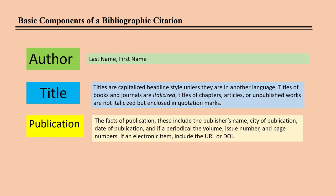The basic components of a bibliographic citation are the author's name, last name first; the title capitalized headline style, with the titles of books in italics and the titles of articles in quotation marks; and publication information, which differs for each type of publication. But more on that later.